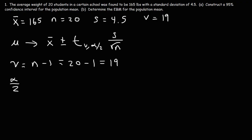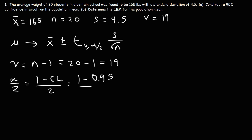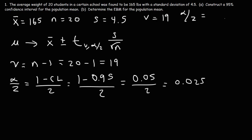Alpha over 2 is the one-tail alpha value. The two-tail alpha is just alpha. Our one-tail alpha is calculated as 1 minus the confidence level divided by 2. The confidence level is 95%, or 0.95 as a decimal. So 1 minus 0.95 is 0.05, and divided by 2 gives us 0.025. That is our one-tail alpha value.